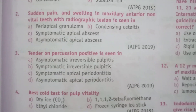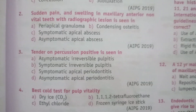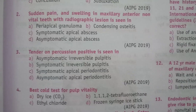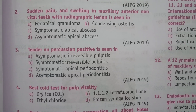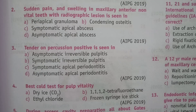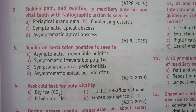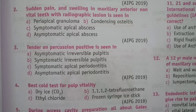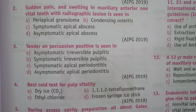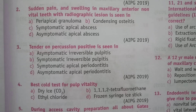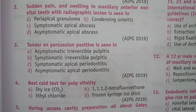Next question: tender on percussion (percussion positive) is seen in — asymptomatic irreversible pulpitis, symptomatic irreversible pulpitis, symptomatic apical periodontitis, or asymptomatic apical periodontitis? The answer is symptomatic apical periodontitis.